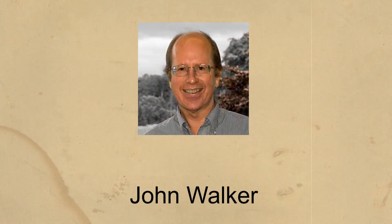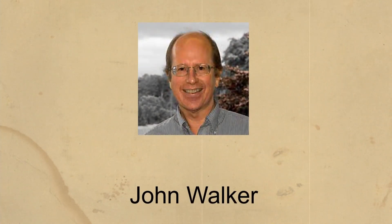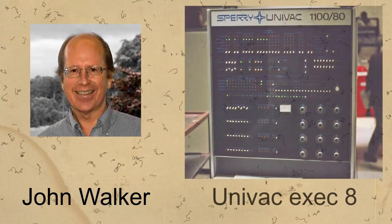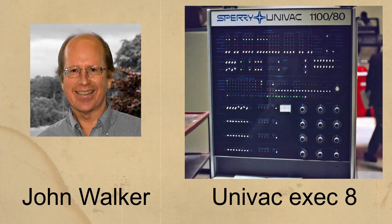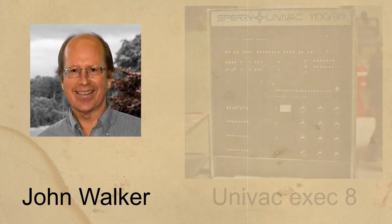Animal was written by John Walker in 1974 for the Univac EXEC 8 operating system, which ran on the Univac 1100 computer.